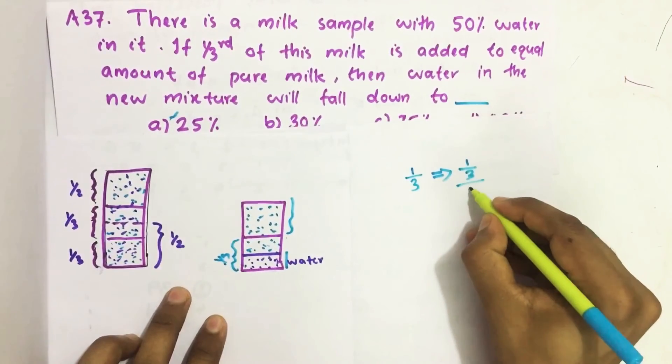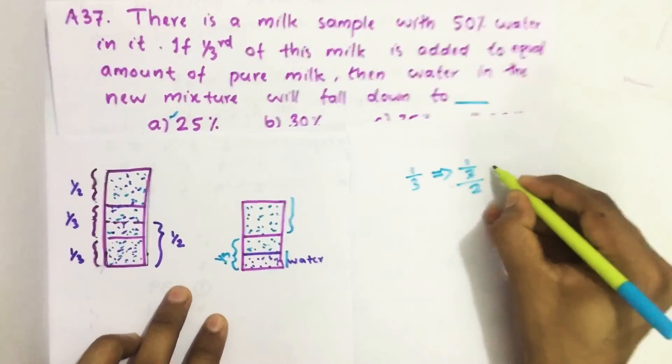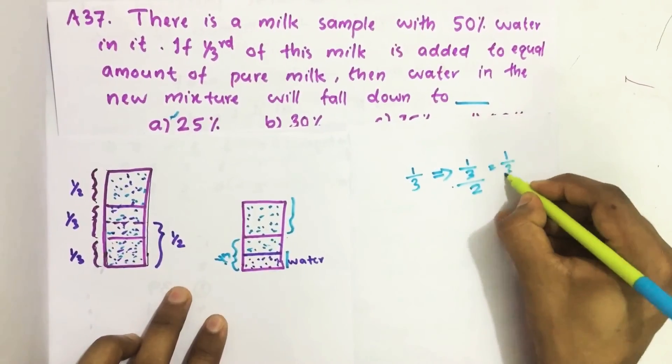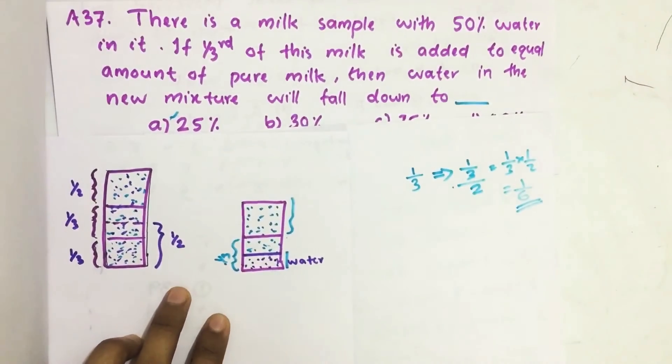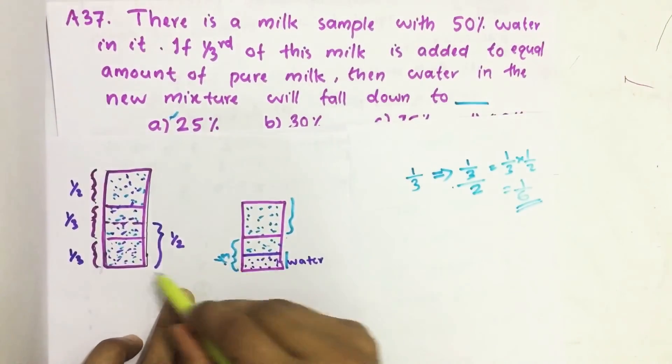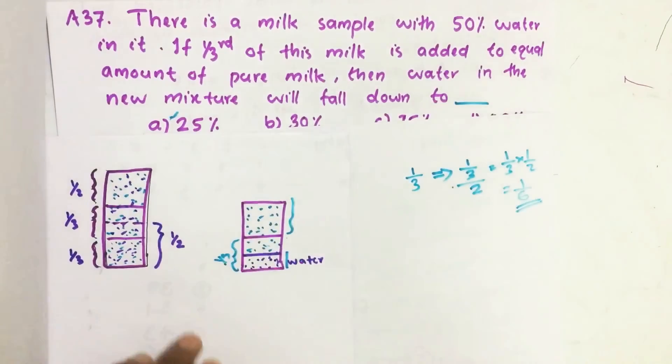Half of this divided by two. This we get one by three into one by two, which is one by six. So one by six out of this jar is water.